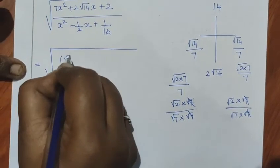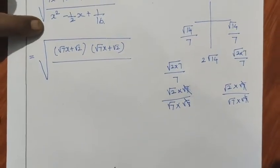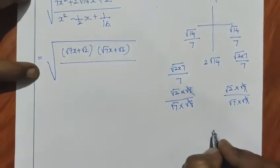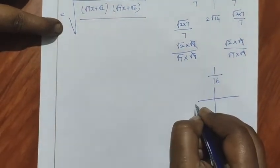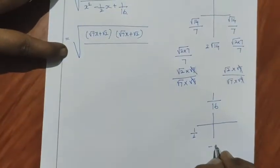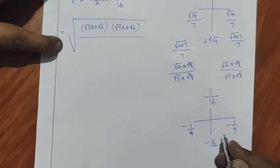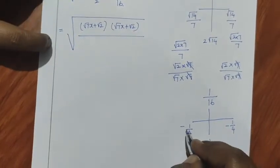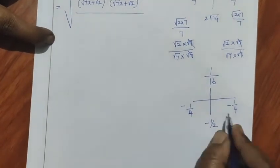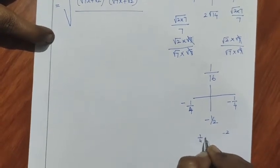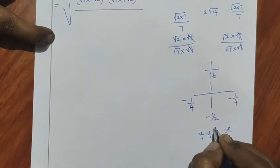So the numerator factors as square root of (root 7 x plus root 2) into (root 7 x plus root 2). For the denominator x squared minus 1 by 2 x plus 1 by 16: factor as (x minus 1 by 4) into (x minus 1 by 4). Check: minus 1 by 4 minus 1 by 4 equals minus 2 by 4 equals minus 1 by 2, which matches the coefficient of x.